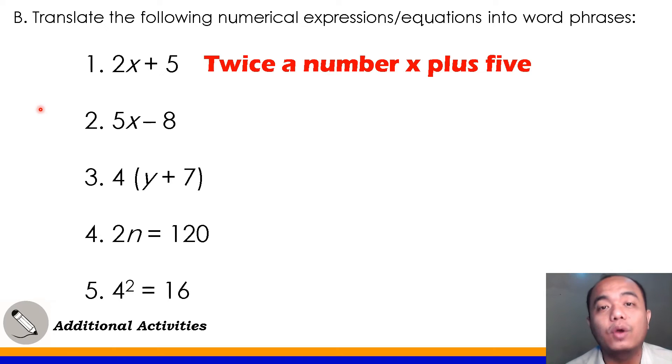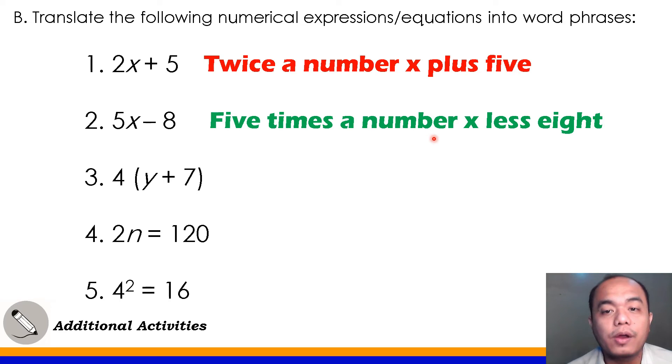Number 2, you can also have your own answer there as long as if you evaluate it, it is correct. Number 2 here, the possible answer is five times a number X less 8. You could also say 8 is subtracted from 5X. That's also possible. So, this is just a possible answer for this item.